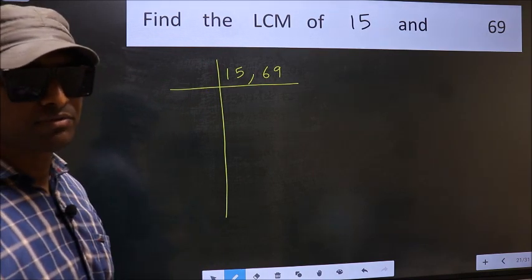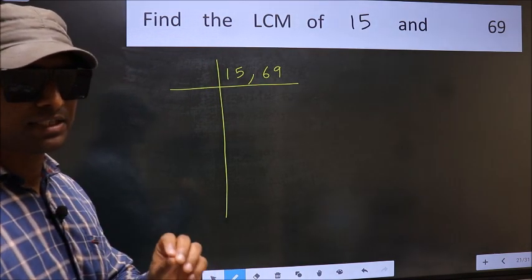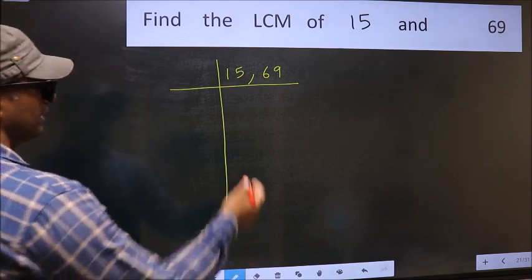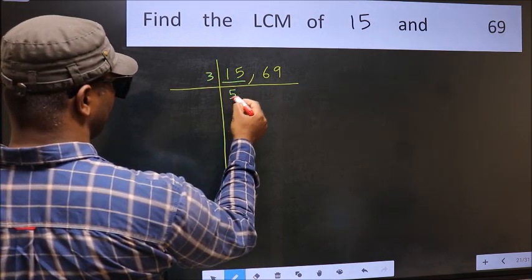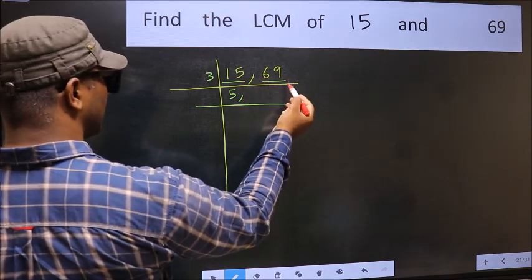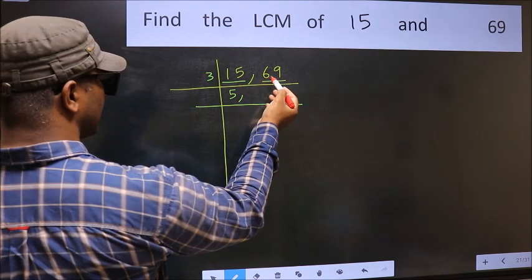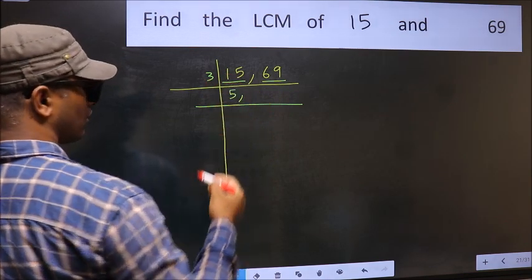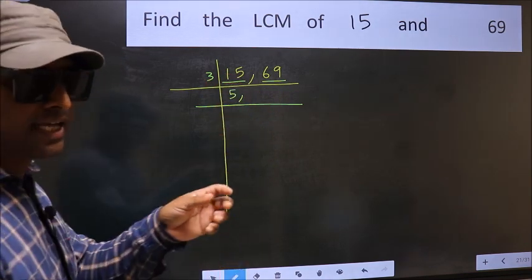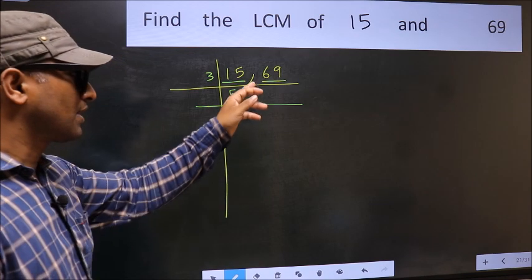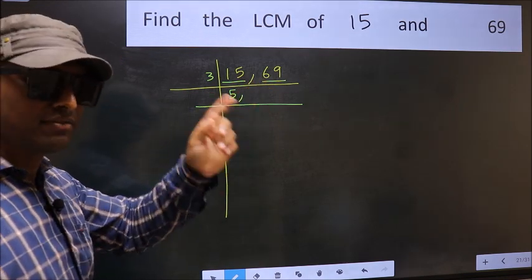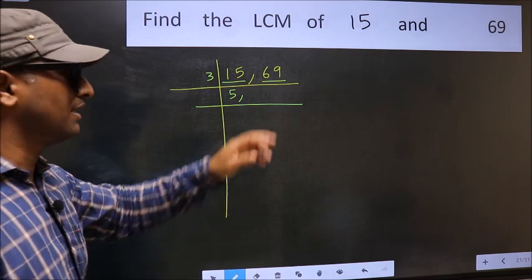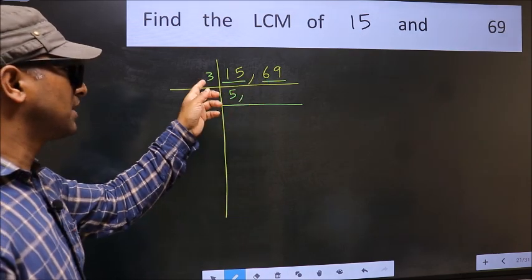Now focus on the first number which is 15. 15 is 3 times 5. The other number is 69. To check whether 69 is divisible by 3, add the digits: 6 plus 9. We get 15 and 15 is divisible by 3, so this number is also divisible by 3.